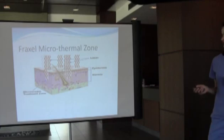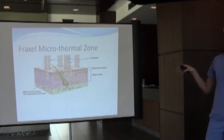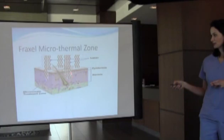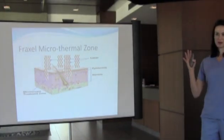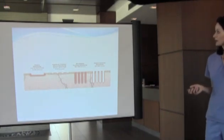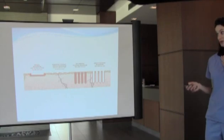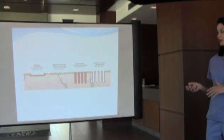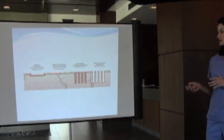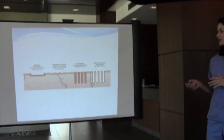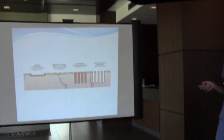With the Fraxel, you get these pixelated beams, but compared to CO2 which has a big saucerization effect of heat, with Fraxel you literally just get these little microthermal zones — the heat doesn't spread out as far. To illustrate: ablative resurfacing like max FX removes the whole area. Fractionated CO2 like Active FX has bridges of intact skin. Non-ablative fractional resurfacing like Fraxel applies just heat, but the tissue is still there and not removed. The Deep FX is where we are actually removing that tissue.